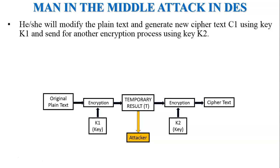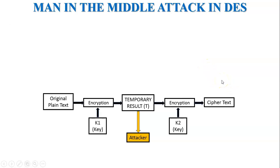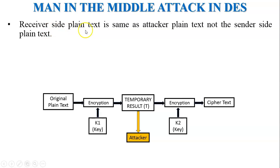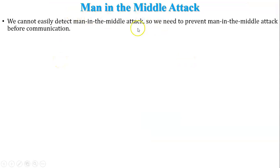The final ciphertext is sent to the receiver. The receiver decrypts the final ciphertext, and the plaintext on the receiver's side is the same as the attacker's modified plaintext — not the original sender's plaintext. This type of attack is called the meet-in-the-middle attack, or man-in-the-middle attack, in DES.